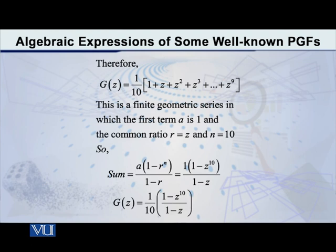So, as you know, we have to do these things on school level. This particular sum is given by A into 1 minus R raised to N, whole divided by 1 minus R. So, therefore, in this case, it would be 1 into 1 minus Z raised to 10, divided by 1 minus Z, and 1 by 10, you remember, we have also removed common from outside.